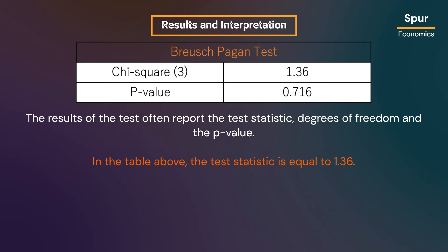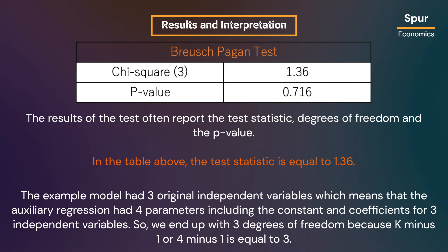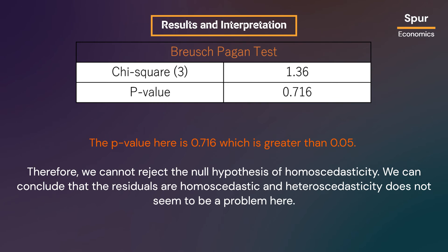Let us take a look at some hypothetical results. In this table, the test statistic is equal to 1.36. The example model had three original independent variables, meaning the auxiliary regression had four parameters including the constant and coefficients for three independent variables, giving three degrees of freedom (k minus 1, or 4 minus 1 equals 3). The p-value is 0.716, which is greater than 0.05. Therefore, we cannot reject the null hypothesis of homoscedasticity, and we can conclude that heteroscedasticity does not seem to be a problem here.